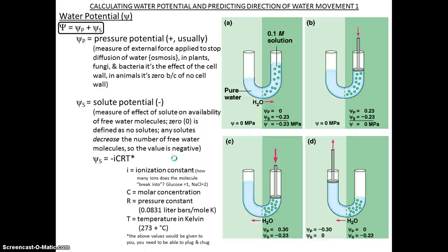When we talk about water potential, we're talking about the direction water will flow across a semi-permeable membrane. We always know that water will go from where there's more water to less water across a semi-permeable membrane.